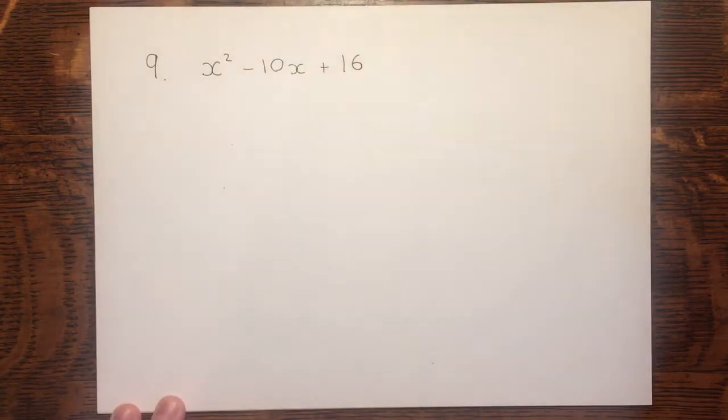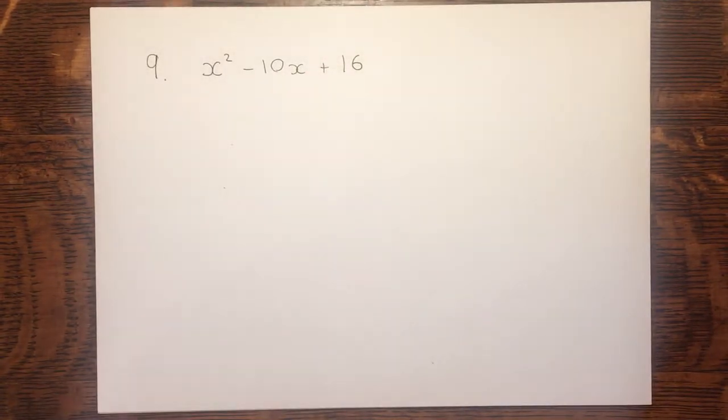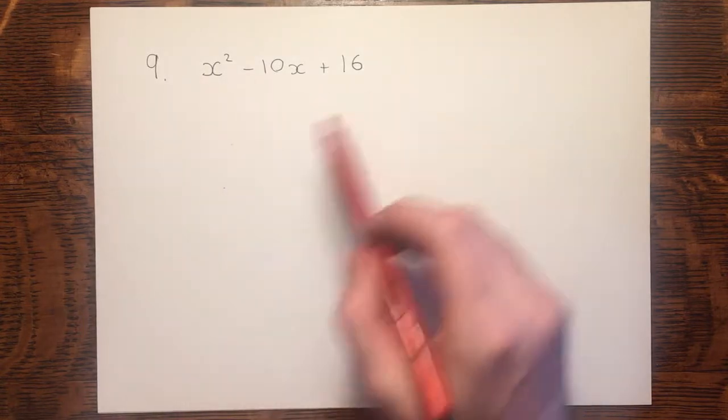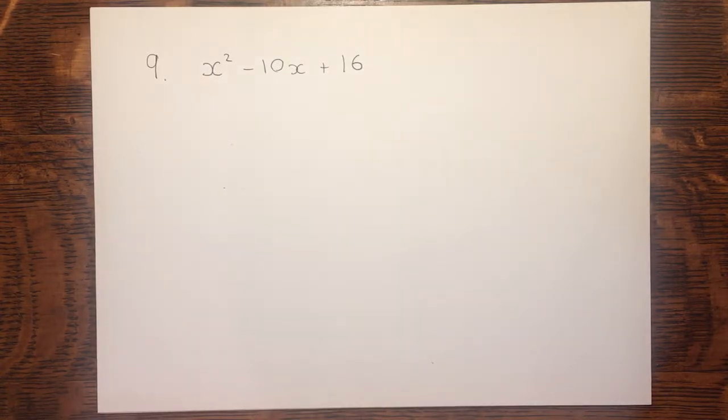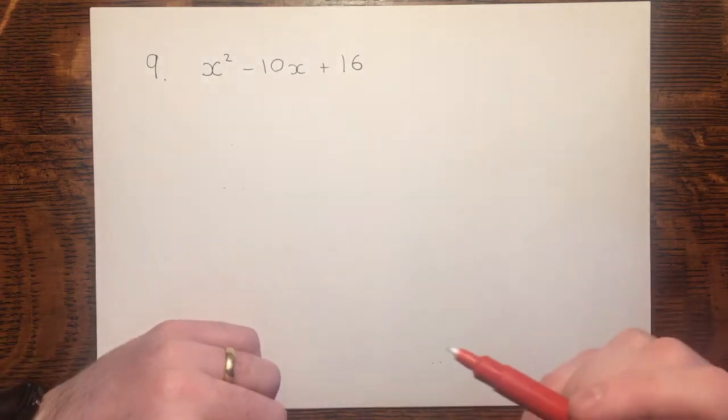Now there are many different factorisation methods that you'll be aware of. The first I would look for is are there any common factors? In this case there are not. And then I would look to see if there was a difference of two squares or anything like that. But before I jump as far as the formula, I'd look for paired brackets.